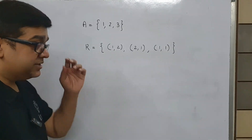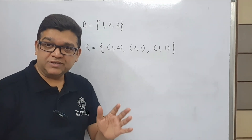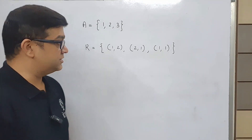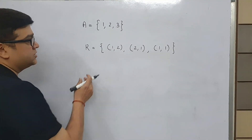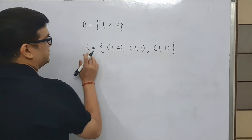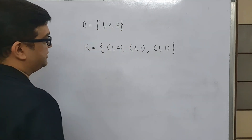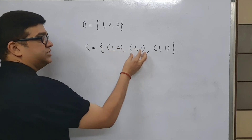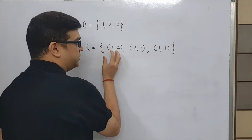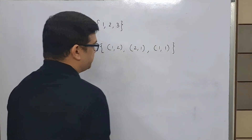Let us look at this example and try to find out whether this relation is transitive or not. This relation R is defined over the set {1, 2, 3} and this relation R has three ordered pairs: (1,2), (2,1), and (1,1).